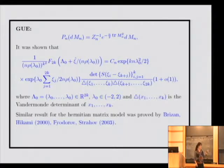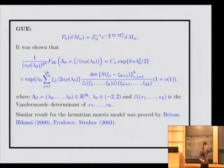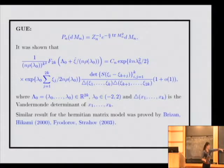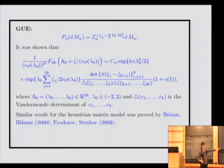A similar result holds for the Hermitian matrix model. This was done by orthogonal polynomials. For the Hermitian matrix model, it was also done by orthogonal polynomials by Brezin, Hikami, Fyodorov, and Strahov. Brezin and Hikami used a physical approach at the critical point. Fyodorov and Strahov did it in a rigorous way.